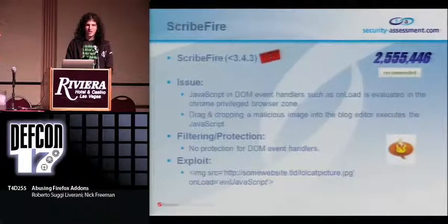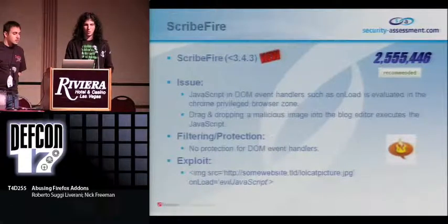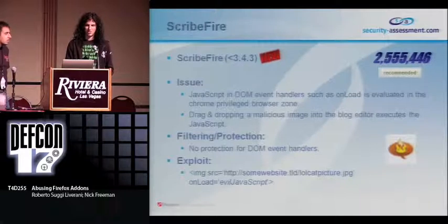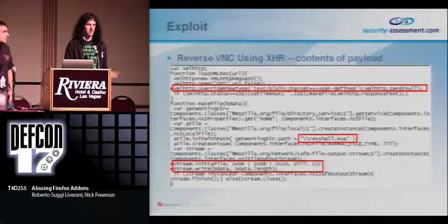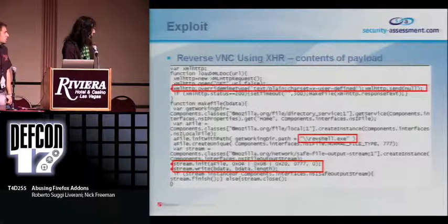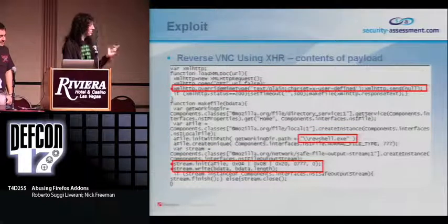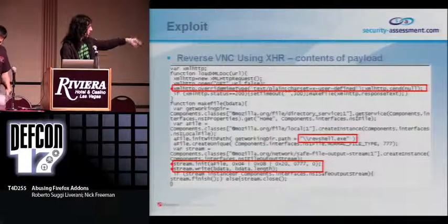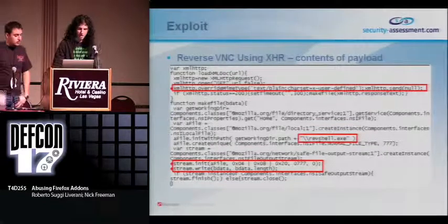Last but not least is ScribeFire — a blog writing extension with about two and a half million downloads, again recommended. Any JavaScript in DOM event handlers like onload or on error on images would be parsed in the Chrome zone. We use an image with nasty JavaScript, and in this case we're going to send a reverse VNC shell using an XMLHttpRequest to download the binary. Use overrideMimeType to set it to x-user-defined, otherwise it downloads in UTF-8 and your binary doesn't work. The demo: launching the Metasploit reverse VNC handler, loading ScribeFire, dragging and dropping the image executes the onload tag, downloading winzip.exe — and on the Linux box, we've got a VNC shell.